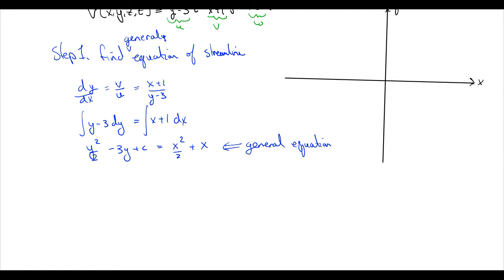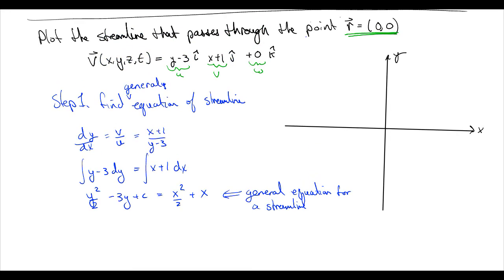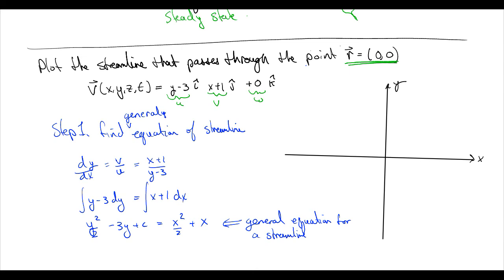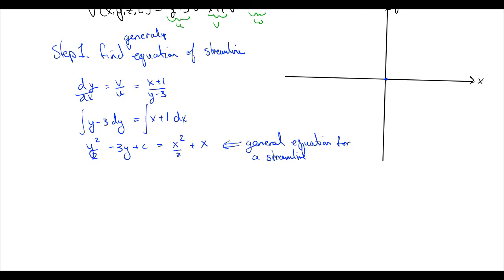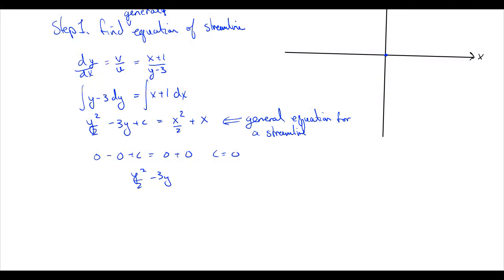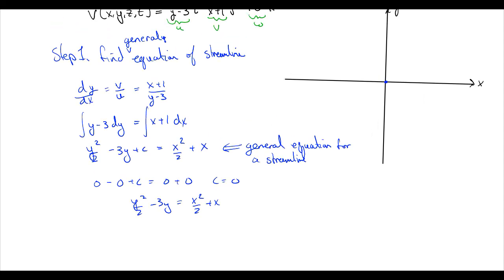Now we want the specific streamline through the origin (0, 0). To solve for C, we plug in x = 0 and y = 0: 0 − 0 + C = 0 + 0, so C = 0. Our specific streamline equation is y²/2 − 3y = x²/2 + x. To plot this, we recognize it as the equation of an ellipse, so we find intercepts and draw an ellipse through them.